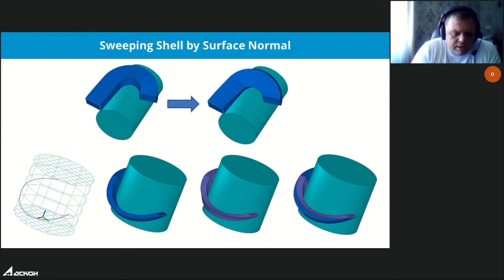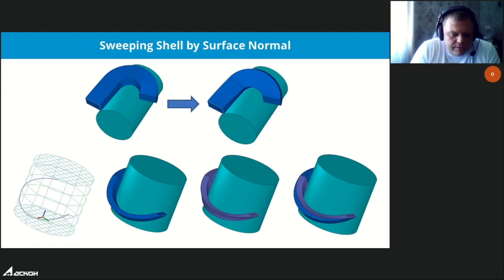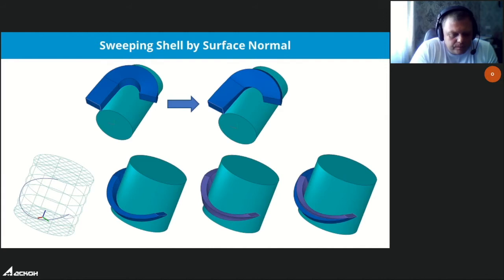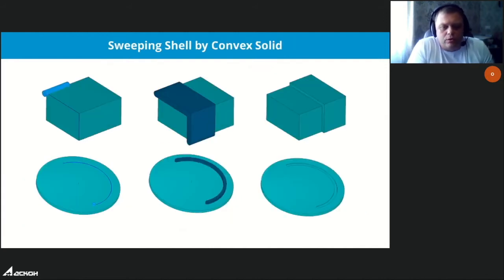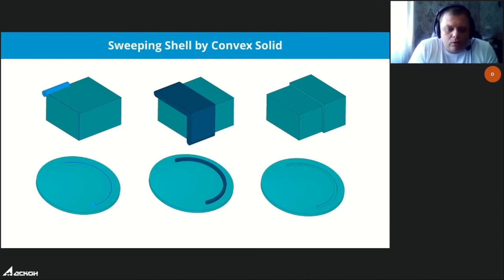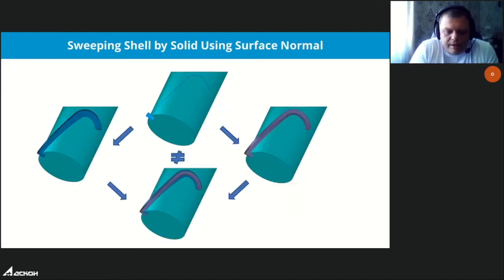Previously this option was hidden inside the algorithm, leading to less predictable behavior. You can now get different shapes of the sweep body using this option, or use a function where the input is a wrapper around the guide curve for more complete control over the shape. Also in sweeping shell features, it's now possible to set not only curves or faces but also simple convex bodies as generatrices.